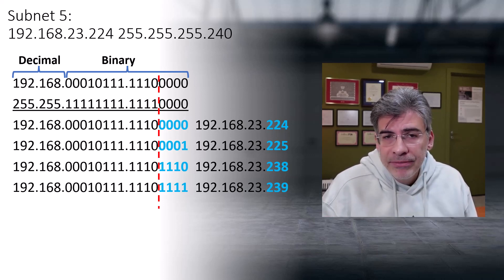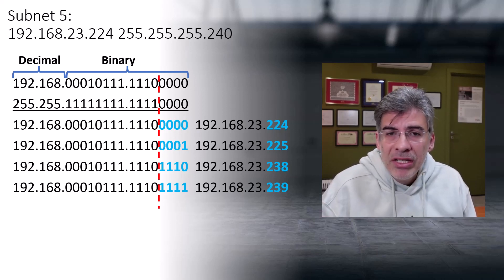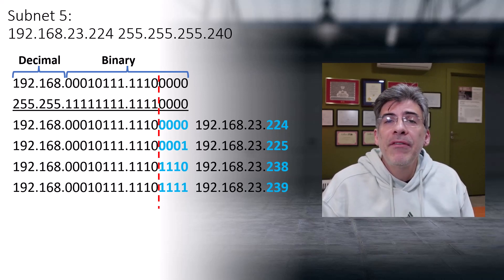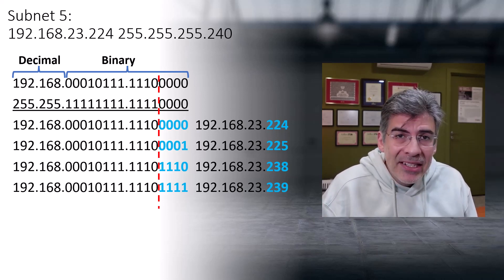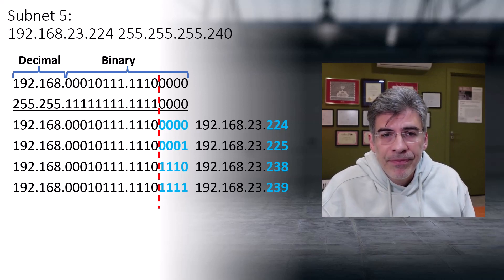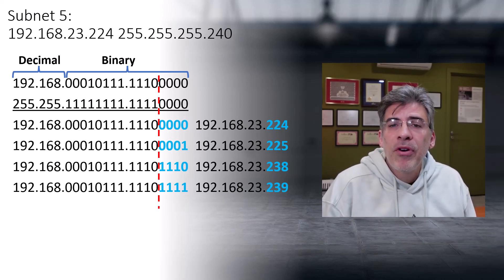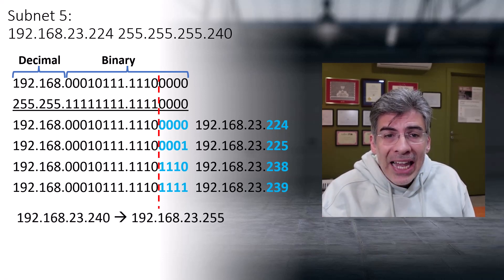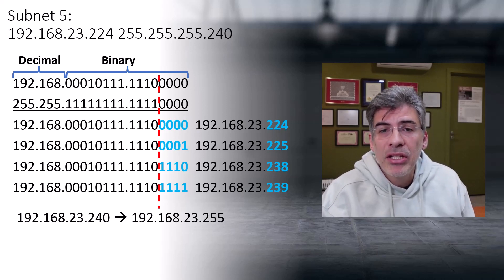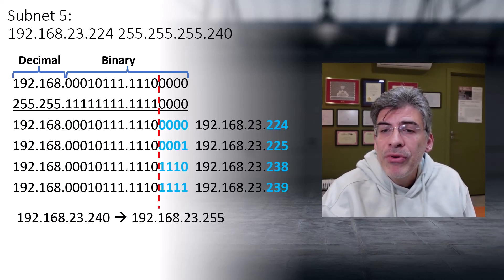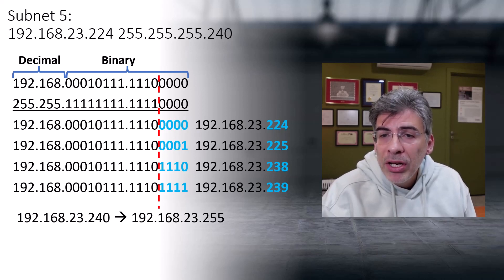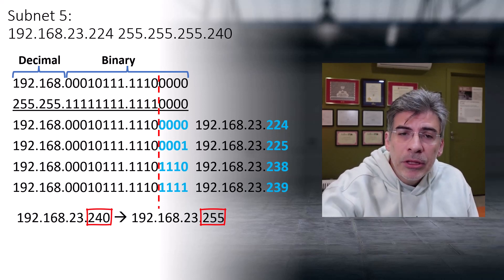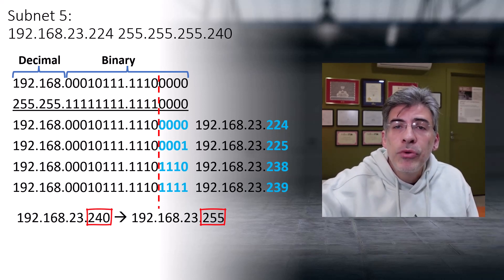At this point, we're done. We've found the network and broadcast address of each subnet, the first and last host addresses of each subnet, and the subnet mask of each subnet. One more thing to note: there are still some addresses left over. Our last broadcast address was 192.168.23.239, so addresses from 192.168.23.240 all the way up to 255 are still available to be subnetted in future subnets.